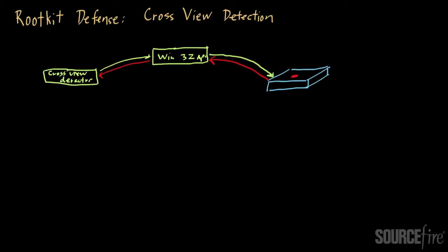Now our cross view detector is also going to directly query the system. It's going to basically directly, without using the Windows API, ask about the contents of the file system. And it's going to get back a response, and this is by writing direct code.